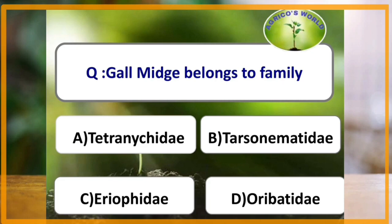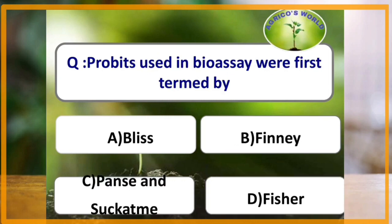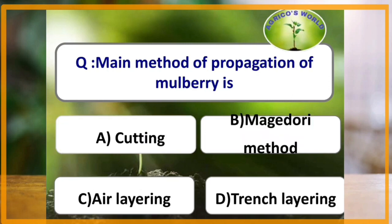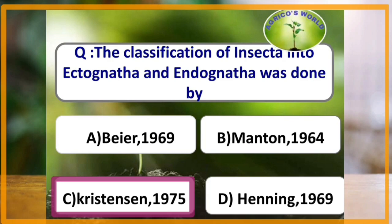Galumna belongs to the family Oribatidae. Prothoracic glands persist even in the adults of silverfish. Probits used in bioassay were first termed by the scientist Bliss. The main method for the propagation of mulberry plants is cutting. The classification of Insecta into Ectognatha and Endognatha was done by Christensen in the year 1975.